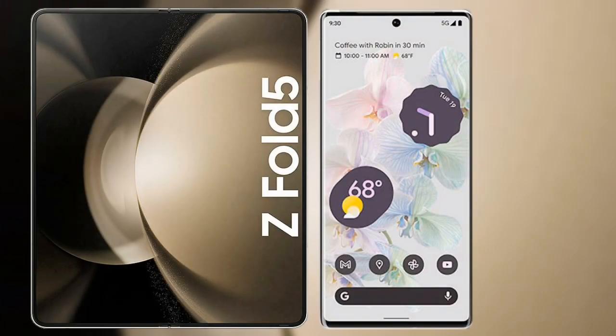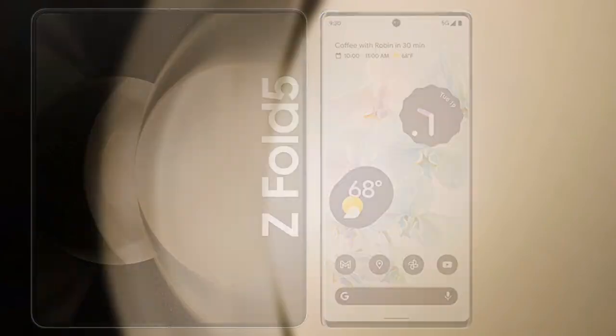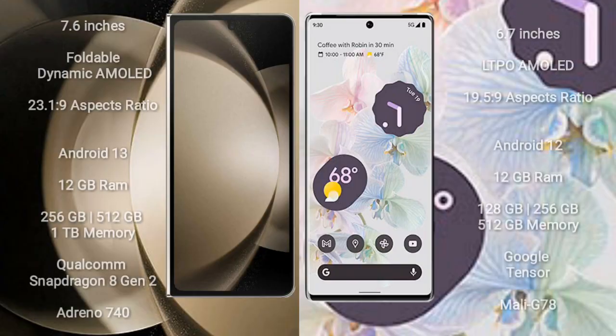I will compare the new Samsung Galaxy Z Fold 5 with Google Pixel 6 Pro. Samsung Galaxy Z Fold 5 comes with a 7.6-inch foldable dynamic AMOLED display and aspect ratio 23.1:9. Google Pixel 6 Pro comes with a 6.7-inch LTPO AMOLED display and aspect ratio 19.5:9.